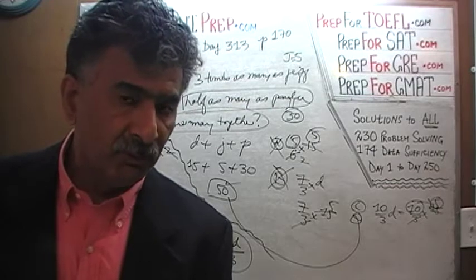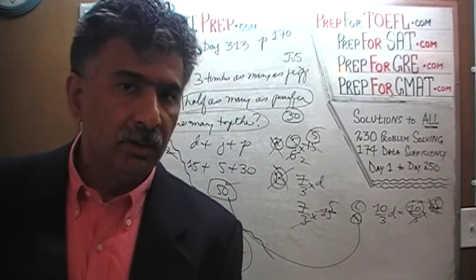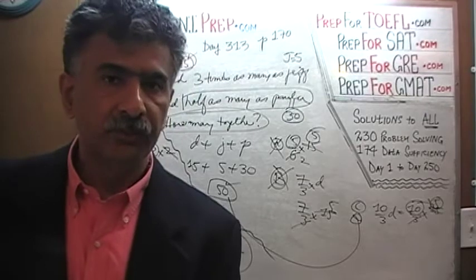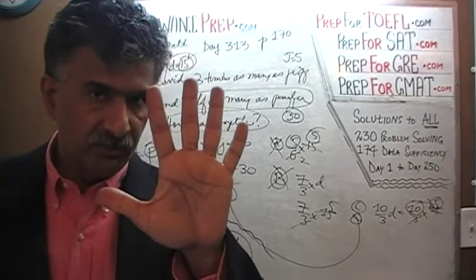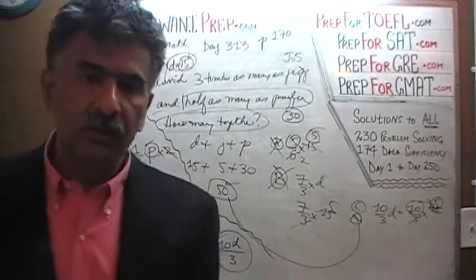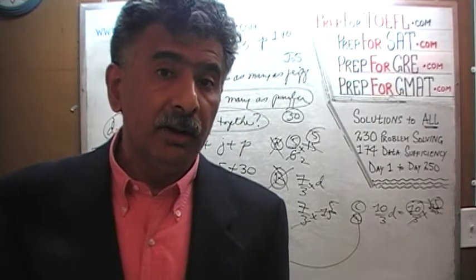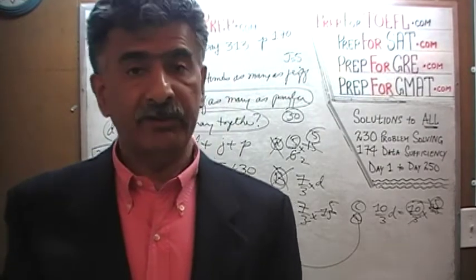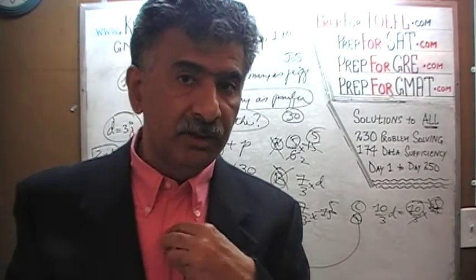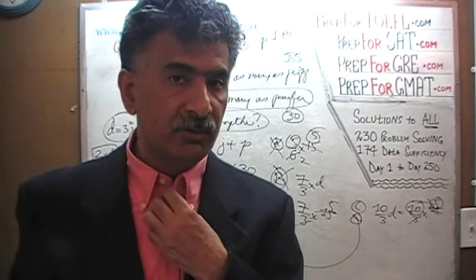If you end up making one of the four most popular mistakes, then your answer choice that you arrive at is going to match one of the answer choices that they give you. They're giving you five answer choices. One of them of course is the right answer. You have to ask yourself, where do the other four answer choices come from? The other four answer choices are the four most popular wrong answers if the problem is solved in a classical way.